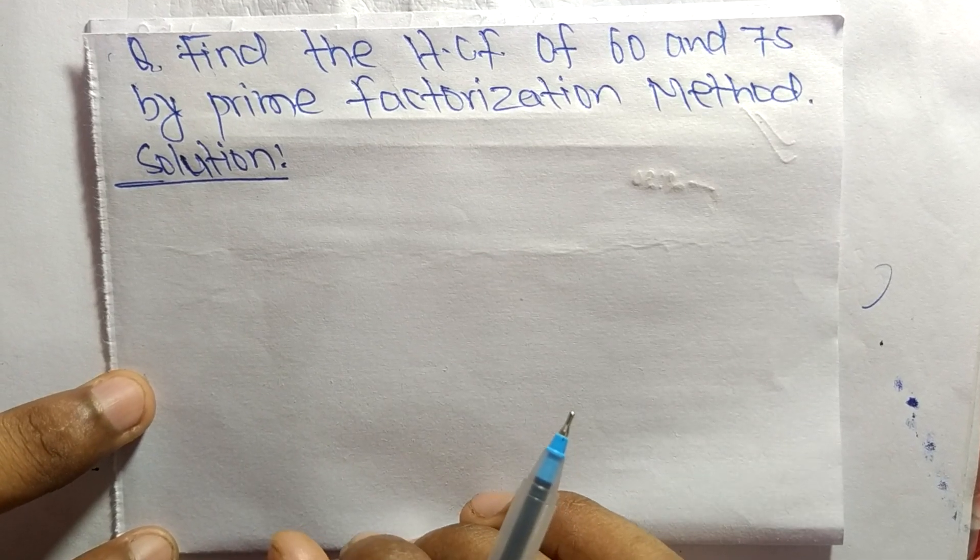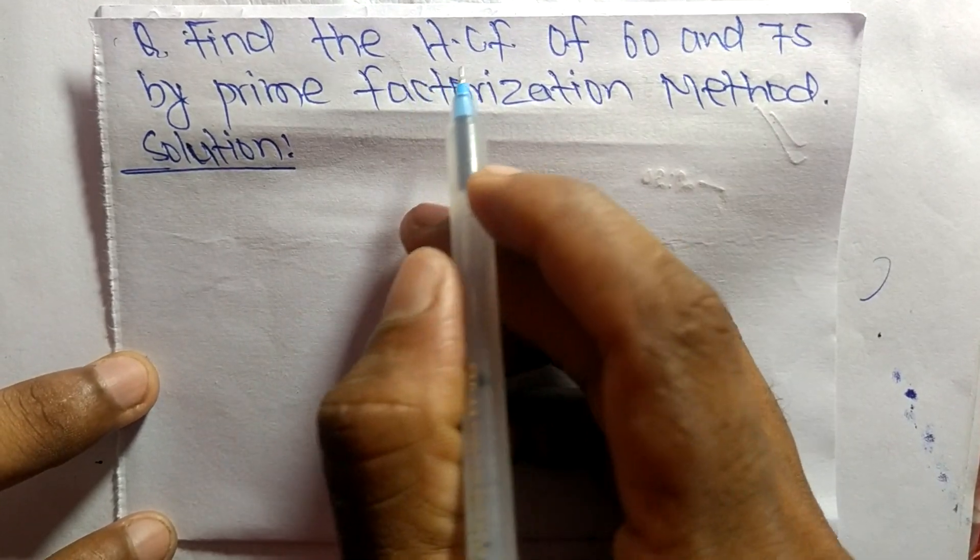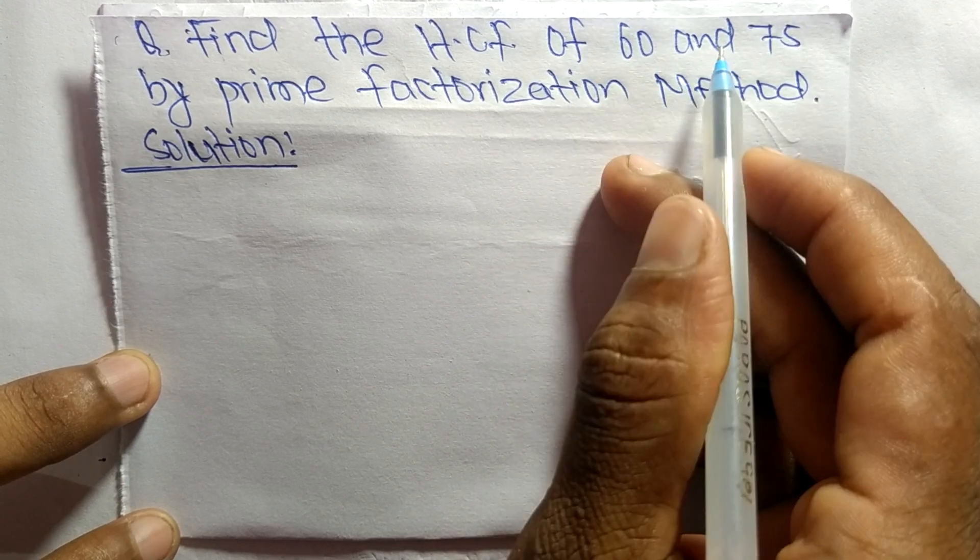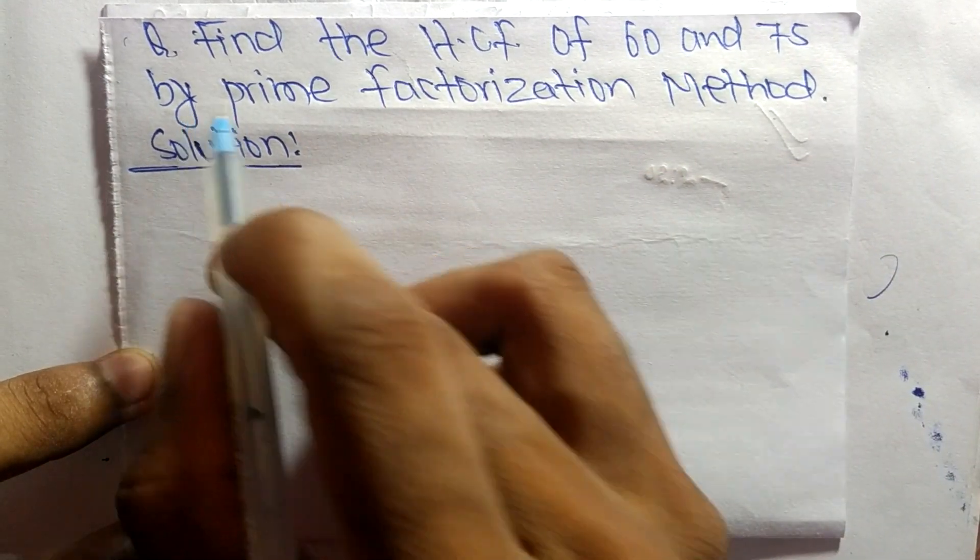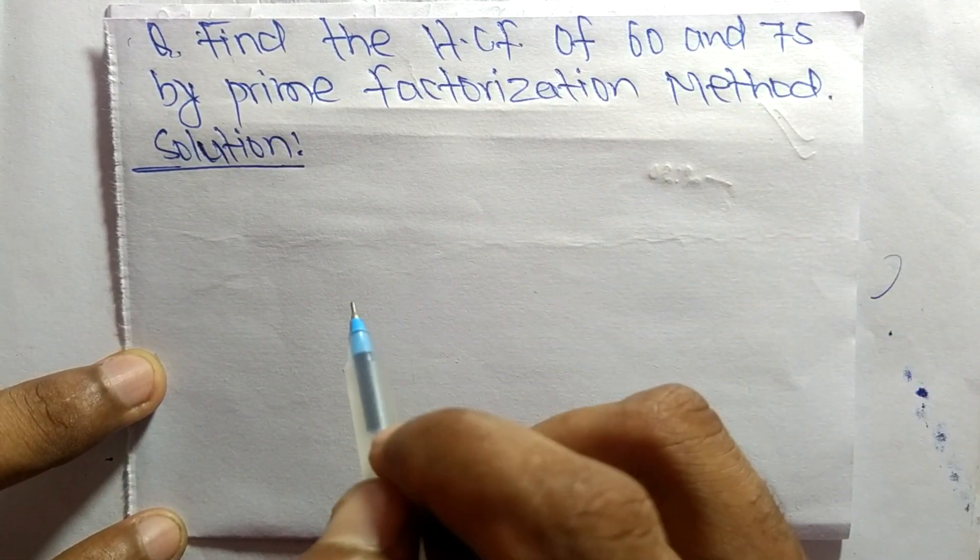So today in this video we shall learn to find the HCF of 60 and 75 by prime factorization method.